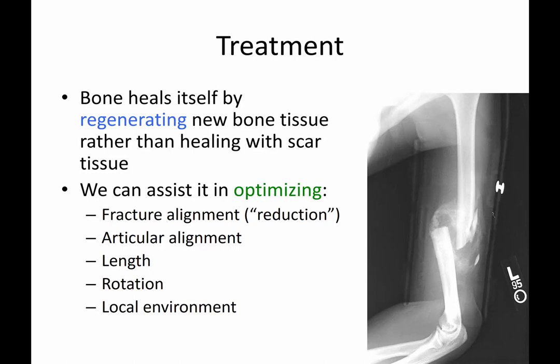Treatment is typically in the form of assisting that healing process by optimizing fracture alignment — also called the reduction, meaning setting the fracture back in place by whatever means you're employing. We can also assist by optimizing articular alignment, restoring intra-articular fractures with step-off or joint depression back to anatomic position, and by optimizing length, rotation, and the local environment.